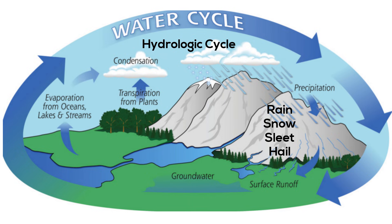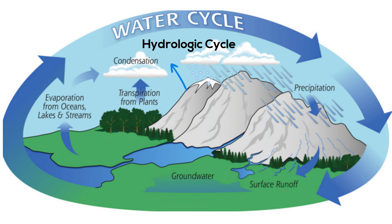Once this water reaches the ground, one of two processes may occur. Some of the water may evaporate back into the atmosphere, or the water may penetrate the surface and become groundwater.